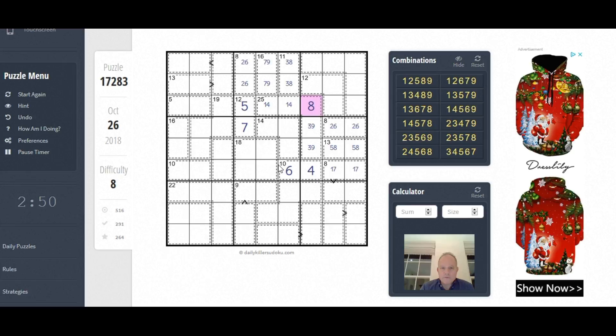So we're making some progress already. This 16 box, we know that's 9-7 in that order because of that 7. The 10 box, the ones with 9 and 7 in it and 6 in it are all ruled out. So that's 2 and 8.